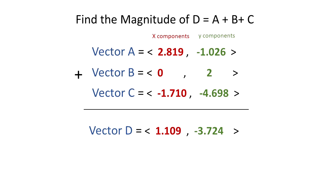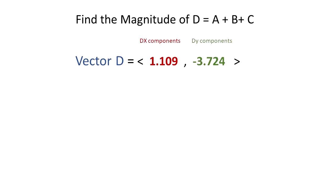We get that Dx equals 1.109 and Dy equals negative 3.724. Now that we found vector D in terms of components, we are going to find the magnitude. The magnitude of vector D equals the square root of Dx squared plus Dy squared.